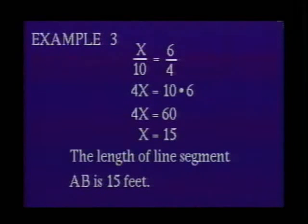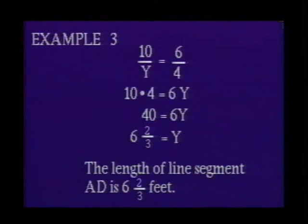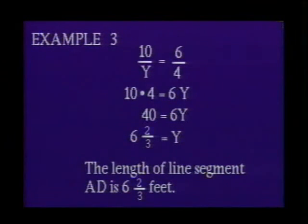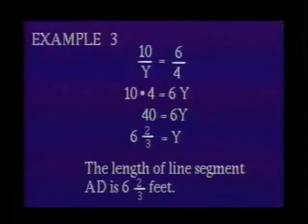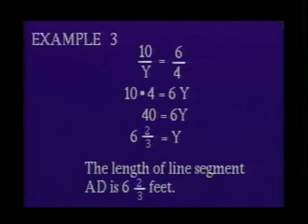Therefore, the length of line segment AB is 15 feet. To find the length of line segment AD, which we shall call Y, we write the proportion: 10 is to Y as 6 is to 4. Solving, we get 10 × 4 = 6Y, which gives Y = 6 and 2/3. Therefore, the length of line segment AD is 6 and 2/3 feet.